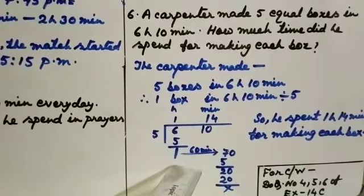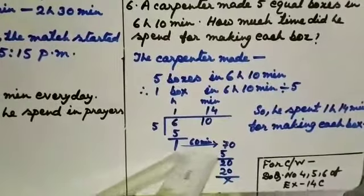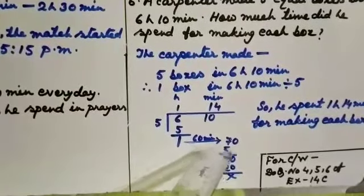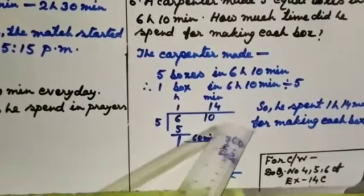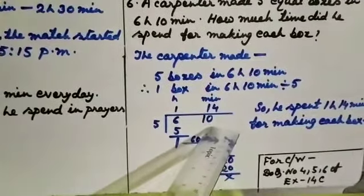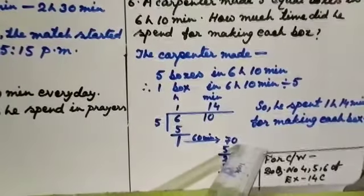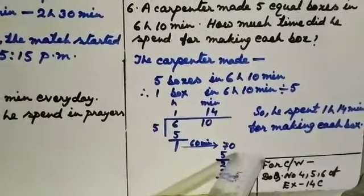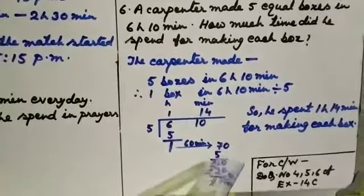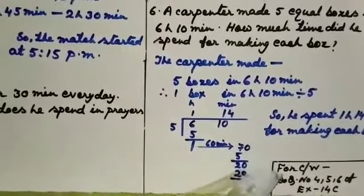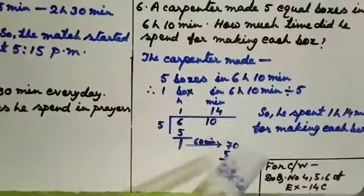Here 1 is remainder. That means 1 hour is equal to 60 minutes, that 60 minutes. That 60 minutes will be added with the minute time, that is 10 minutes. So 60 plus 10 is equal to 70. Now you divide this 70 with 5. 5 ones are 5, carry 2. 0 is here. So 5 fours are 20.